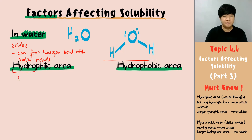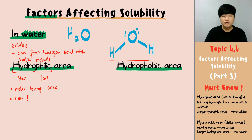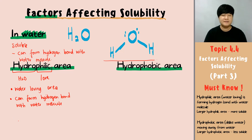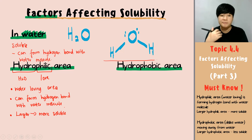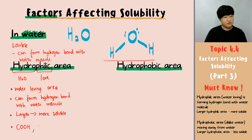Hydrophilic — from the word 'hydro' that represents H2O, and 'philic' which represents love. So the hydrophilic area is the water-loving area. It's the area that loves water and can form hydrogen bonds with the water molecule. Since the hydrophilic area can form hydrogen bonds, the larger this area, the more soluble the molecule will be. Examples of hydrophilic areas include COOH, OH (your alcohol group), and amine groups like NH2.